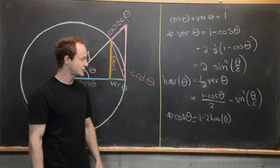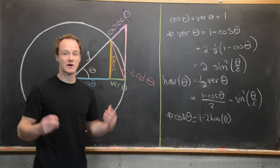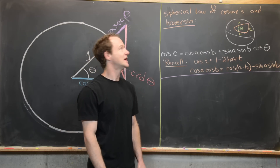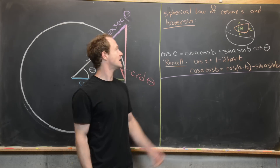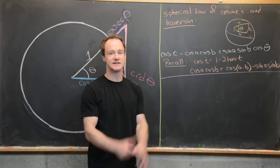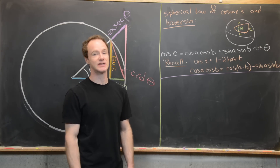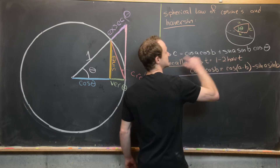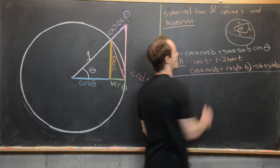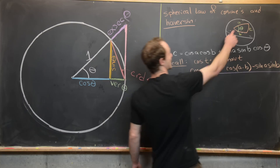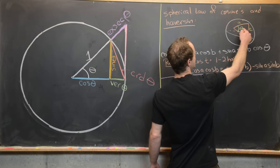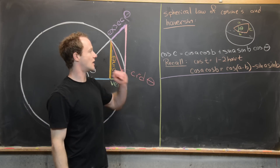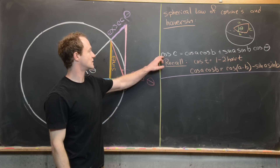Now let's look at an application of this to the spherical law of cosines. There's an important formula built from the haversine function, which we can derive by recalling the spherical law of cosines and then using our translation formula. Let's say we have a unit sphere with a spherical triangle on it having side lengths a, b, c, and the angle opposite c is theta. The spherical law of cosines states: cosine c = cosine a · cosine b + sine a · sine b · cosine theta.